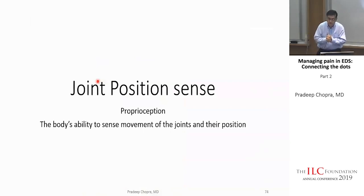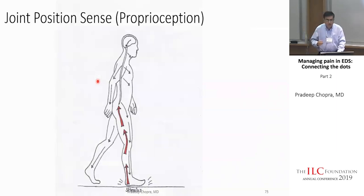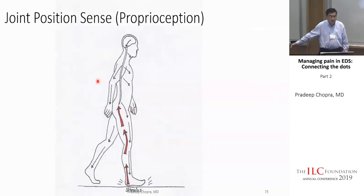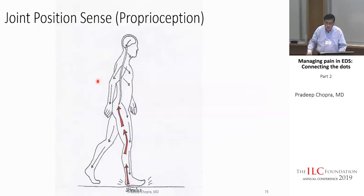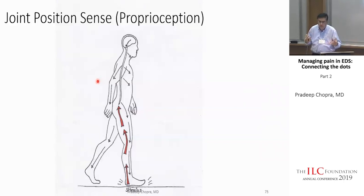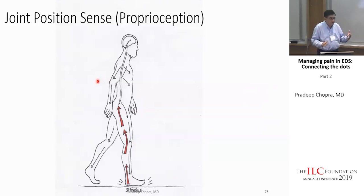Joint position sense, or proprioception, is the body's ability to understand movement. There are sensors in joints, tendons, and ligaments that inform the brain exactly where they are. For example, if I have an itch on my head, I can simply scratch it without looking — my brain knows exactly where my fingers and elbow are. The problem with EDS is that patients lose this joint position sense, often without knowing it. They feel like they don't know where they are in space, especially when walking, and they compensate by looking at where they're stepping.